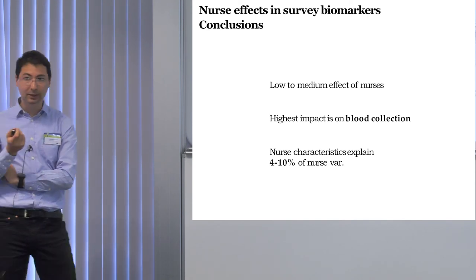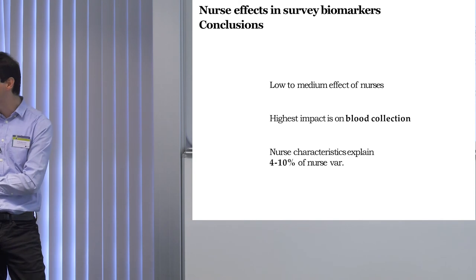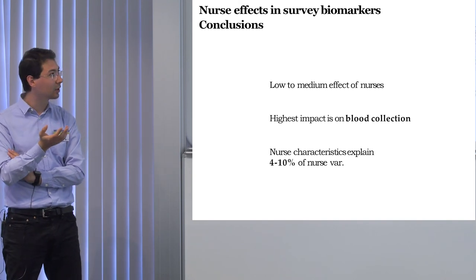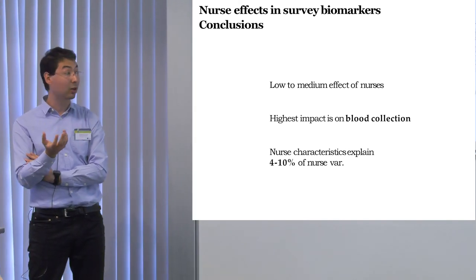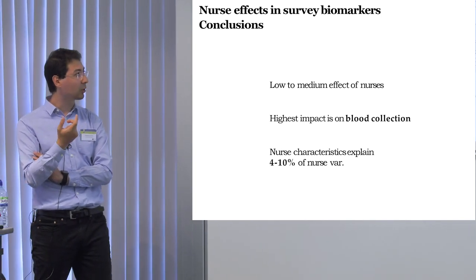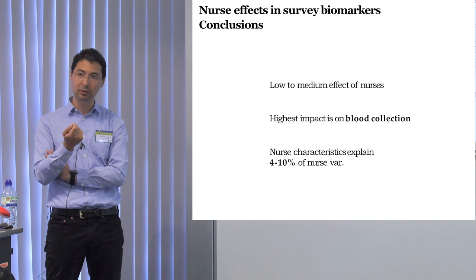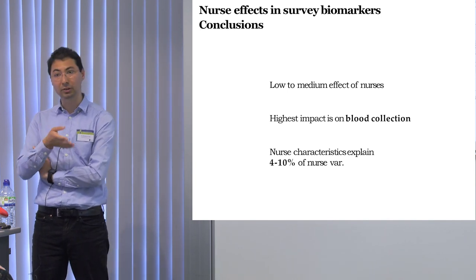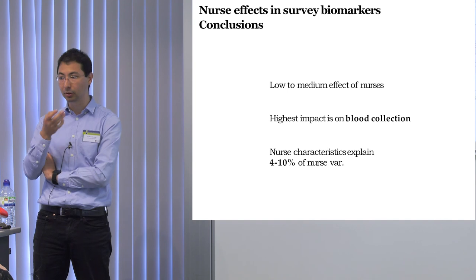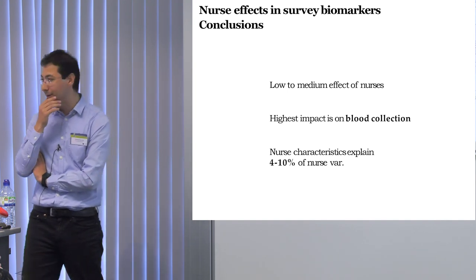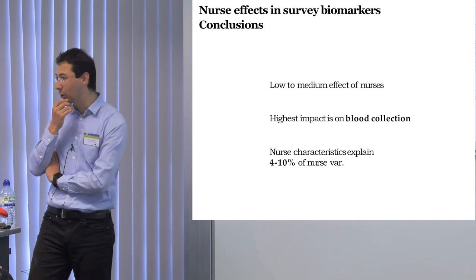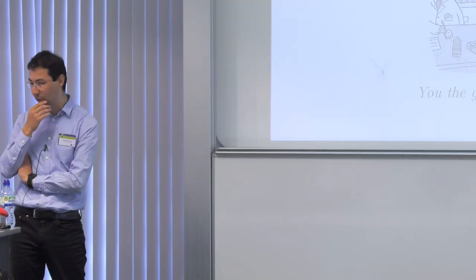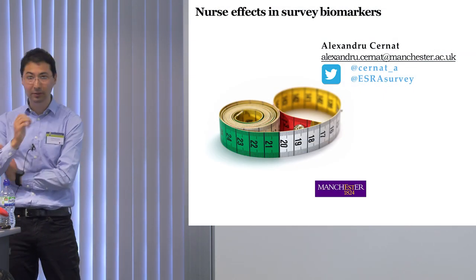So what does this mean — should we stop collecting blood from surveys? The answer is no. Nurses are clearly doing an important job; the data is really valuable and we can do new things with it. But we can probably improve the way they do their job, either in data collection or by trying to train users of the data to use this information to correct for missing data, and convince researchers to include nurse effects in their models for non-response — because the data is there, it's basically free, and we should use it.